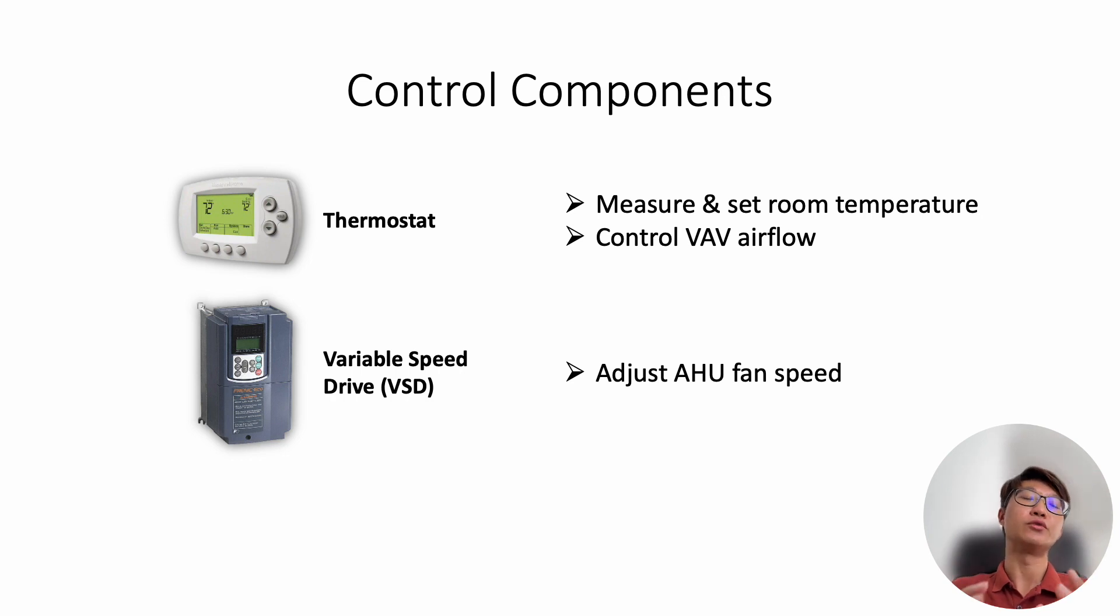Then the second component we need is the variable speed drive. This is to control the main supply airflow. When you don't need so much airflow, you start to close the VAV box. You also want to reduce the supply airflow so you can save some energy. So this is usually mounted at the air handling unit, the AHU.